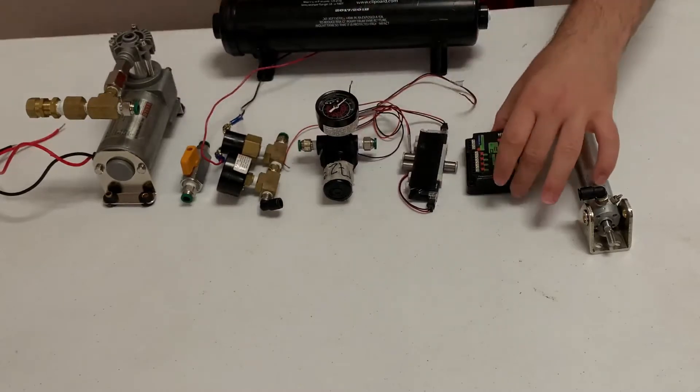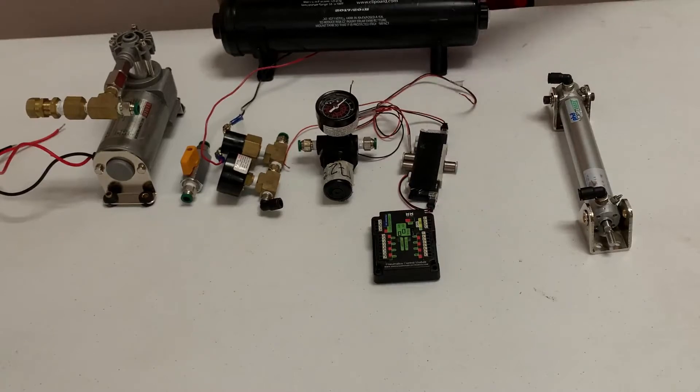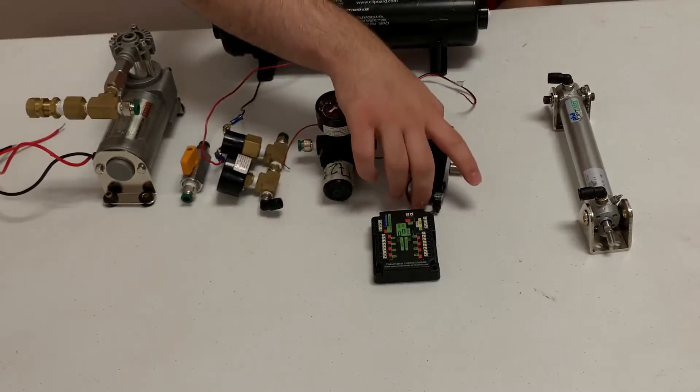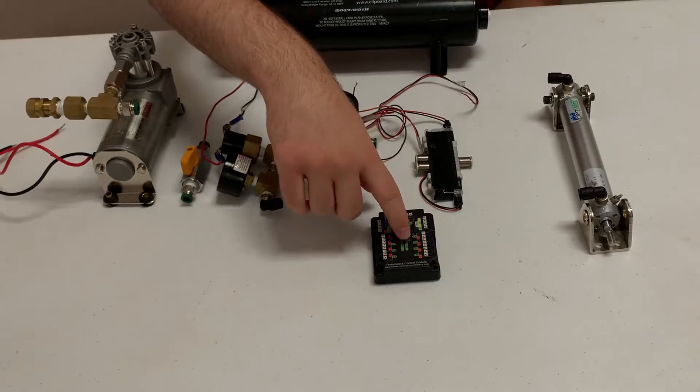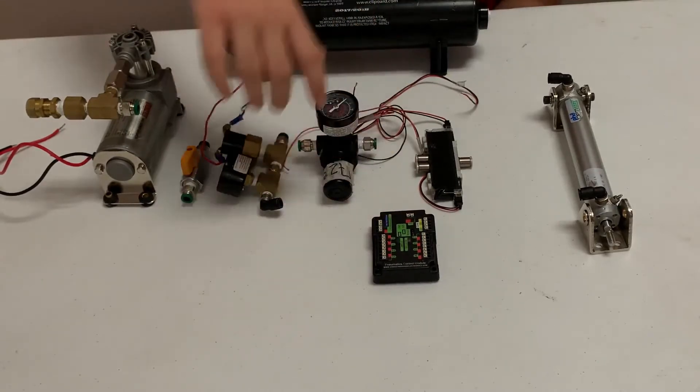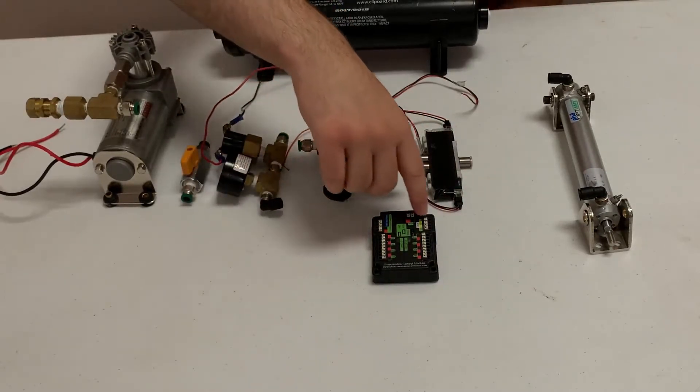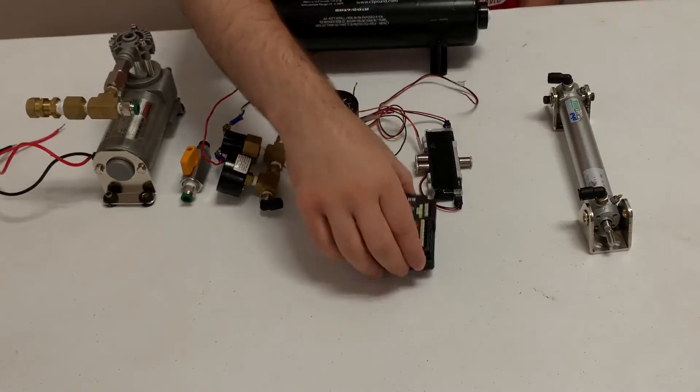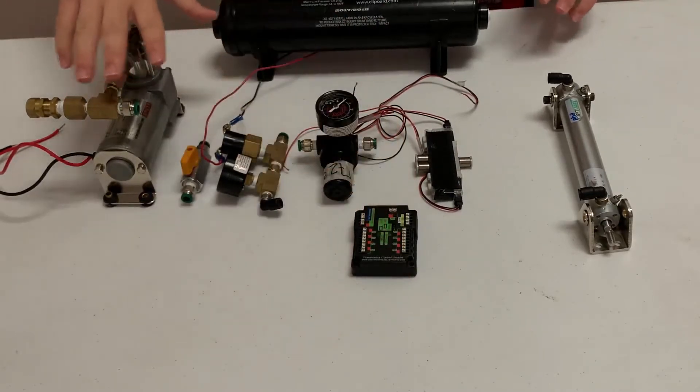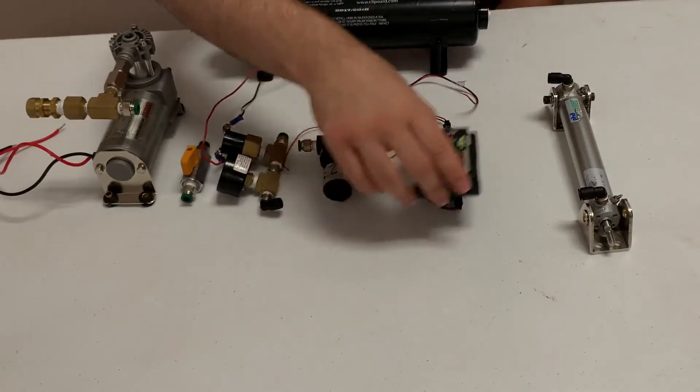Next up is our PCM, our pneumatics control module. This is what connects everything together and gives our electronics a way to communicate with our pneumatics. All our solenoid valves are connected here, our compressor is connected here, our electronic pressure gauge is connected here. It's all in a system and then you connect this to your CAN bus and to your power distribution board. This is really how you connect your pneumatics to your control system. There's a separate video on how to wire up your control system. I'll link that down in the description.